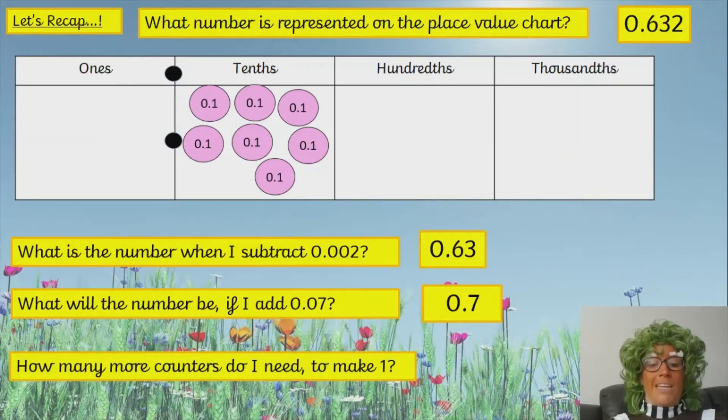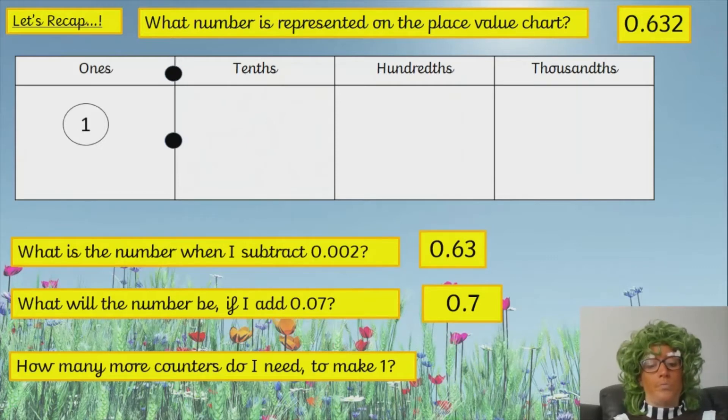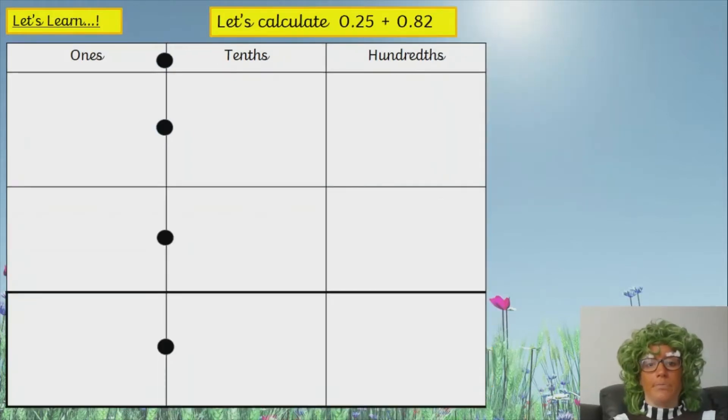How many more counters do I need to make one? If you need to get one whole, how many more? So, if you think back to that hundredth square, we've got seven-tenths. We've got 70 out of the hundred coloured in. So, how many more do I need to colour in to get to one? Well, if you've got seven-tenths, you're going to add three-tenths. You're going to add three-tenths to give you ten-tenths, which you can then exchange for one whole. So, you're going to add 0.3. So, three-tenths.